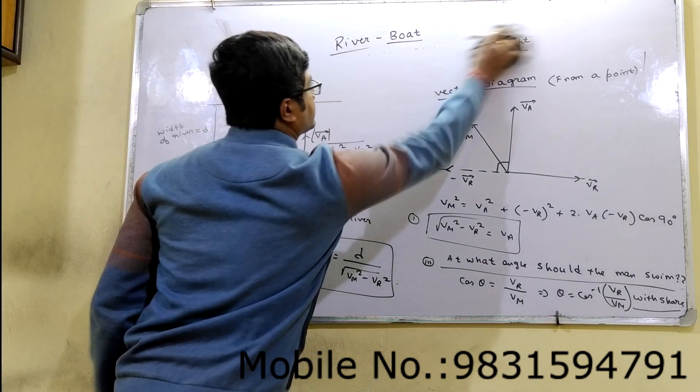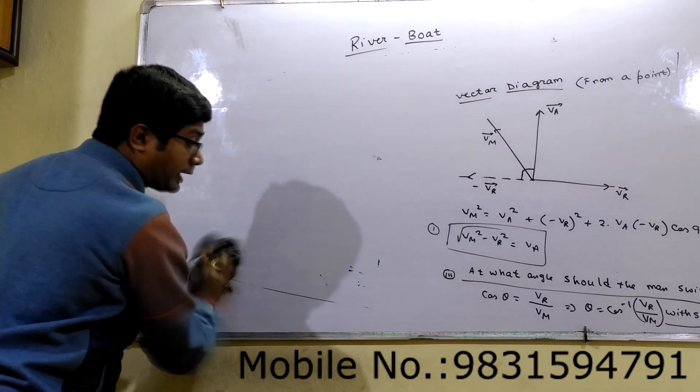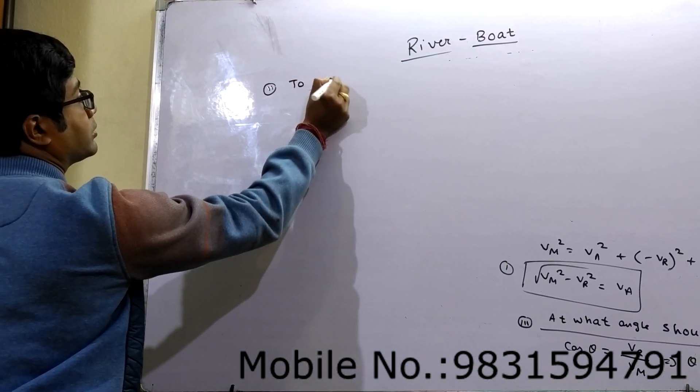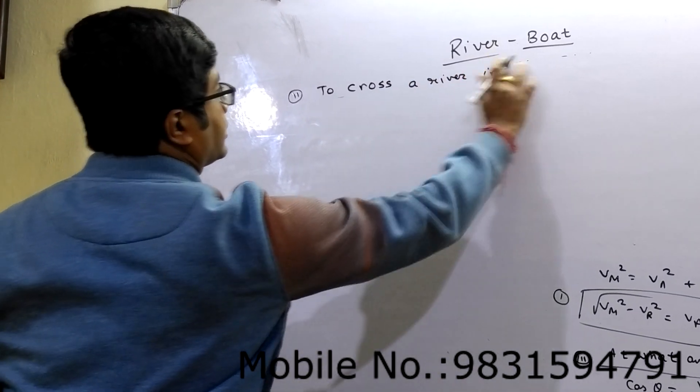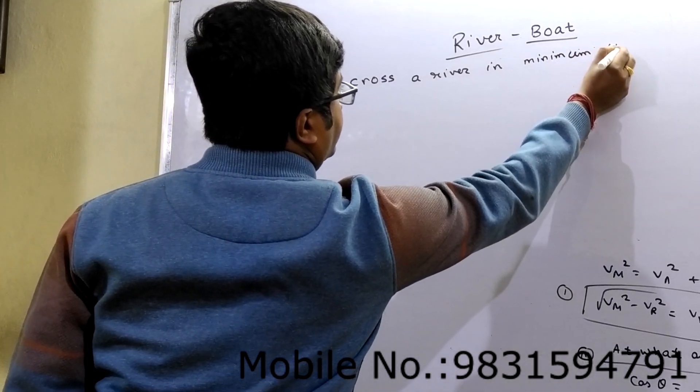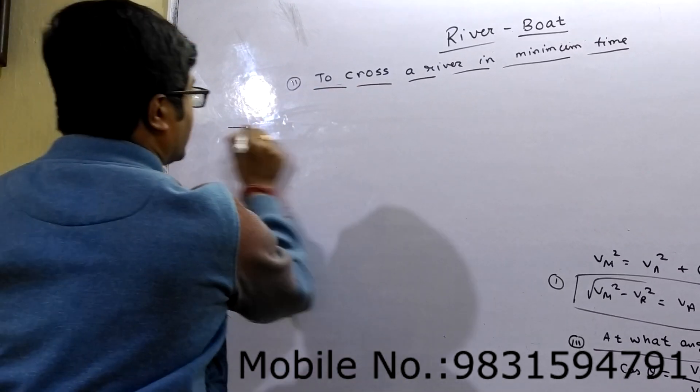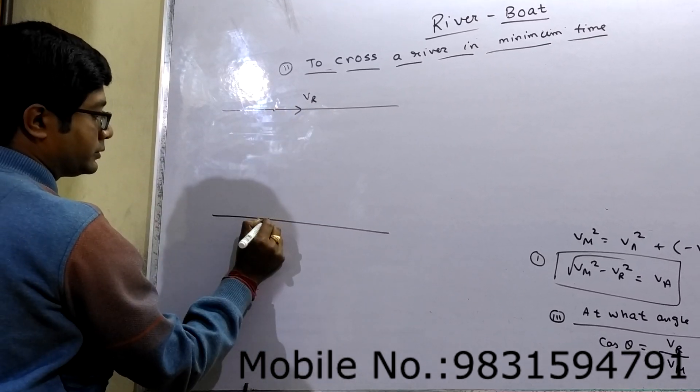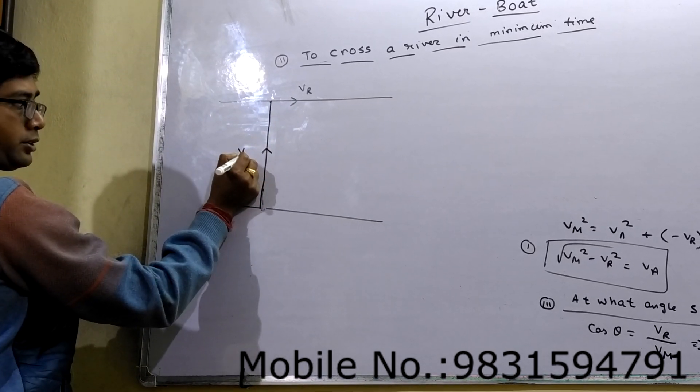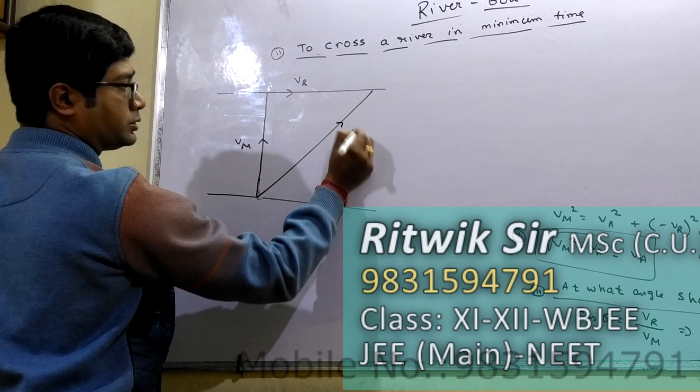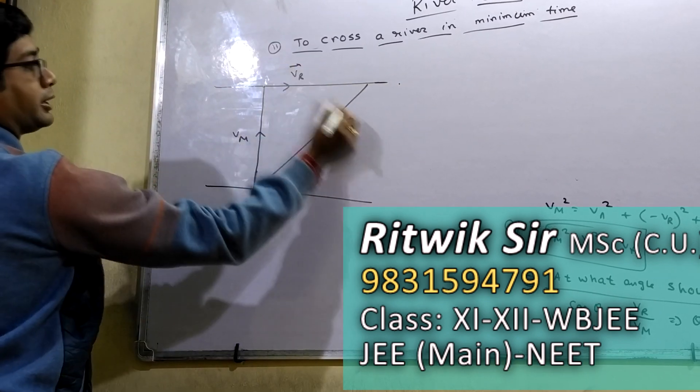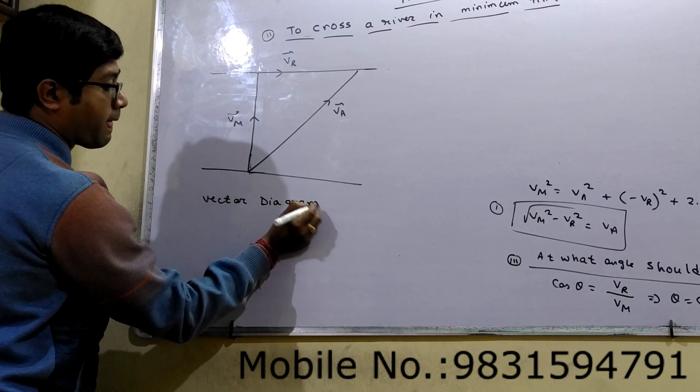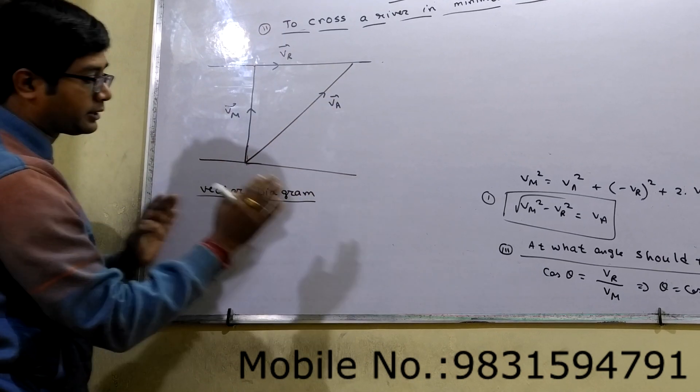Now, second part: to cross a river in minimum time. There are four cases total. To cross a river in minimum time, we have to swim in this direction, normal straight direction, and due to stream we will drift at least. So this is VA vector diagram. Now we have to draw vector diagram. What is vector diagram? From a point, all the vectors, all the three vectors are taken from a point.